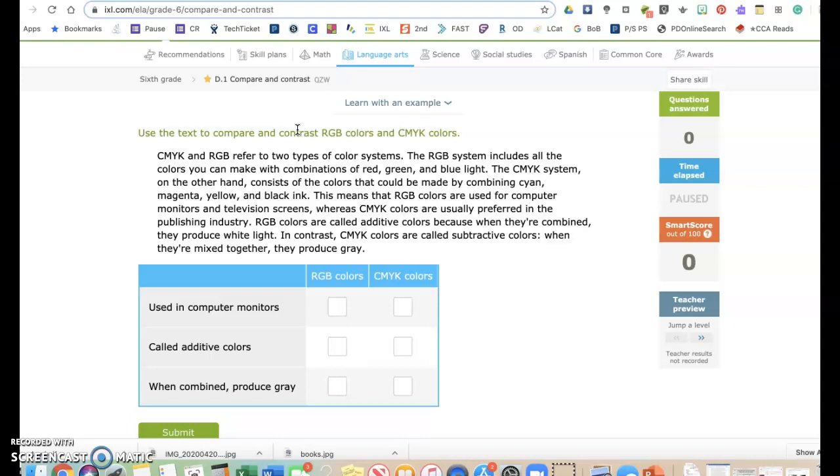CMYK and RGB refer to two types of color systems. The RGB system includes all the colors you can make with combinations of red, green, and blue light. The CMYK system, on the other hand, consists of the colors that could be made by combining cyan, magenta, yellow, and black ink. This means that RGB colors are used for computer monitors and television screens, whereas CMYK colors are usually preferred in the publishing industry. RGB colors are called additive colors because when they're combined, they produce white light. In contrast, CMYK colors are called subtractive colors. When they're mixed together, they produce gray.